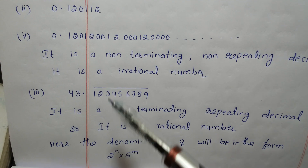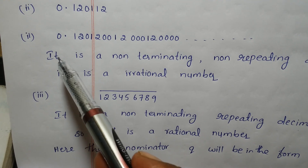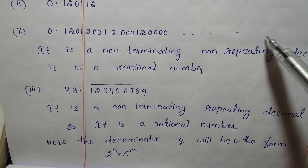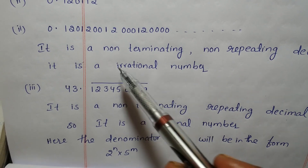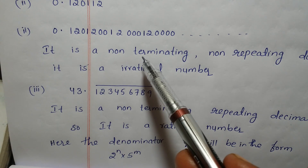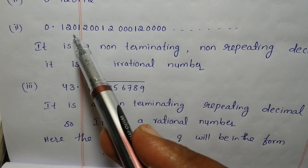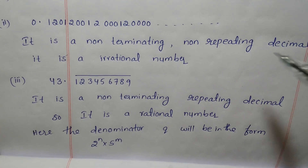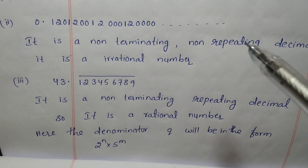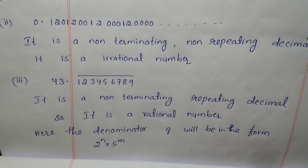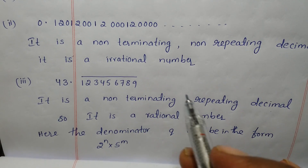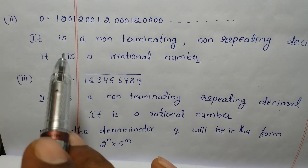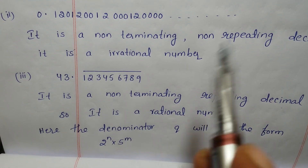It is an irrational number. None of the decimals are repeating — it is non-repeating. Non-terminating, non-repeating decimals are called irrational numbers. Therefore, the given number is an irrational number.